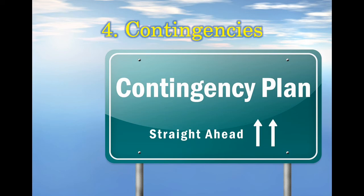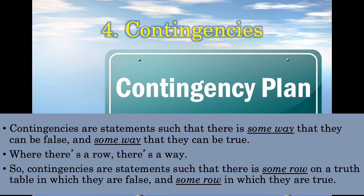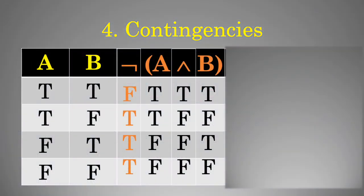In addition to tautologies and contradictions, there are also contingencies. While tautologies and contradictions always have the same truth value in every possible situation, contingencies are statements such that there's some way they can be false and some way they can be true — some rows in which they're false and at least some rows in which they're true. As an example, let's modify our earlier expression and simply use not both A and B. The top row shows the one way this statement can be false — when A and B are both true — while the remaining rows show the ways it can be true. Consequently, it's a contingency.